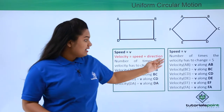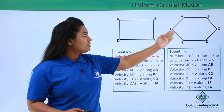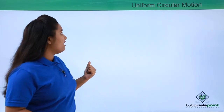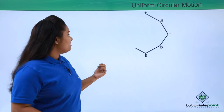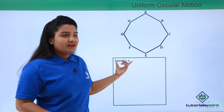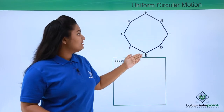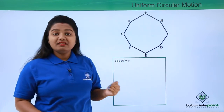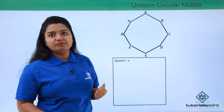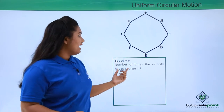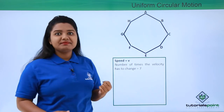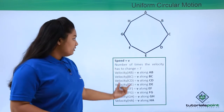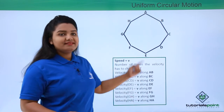Now suppose we again increase the number of sides — let's say we have an octagon, again with constant speed v. Even in this case the velocity of the body has changed at almost all the points: B, C, D, E, F, G, and H, because of the change in direction of motion. So the number of times the velocity changed due to direction is seven times, at those seven points. These are the velocities of the body along each side of this octagonal path.